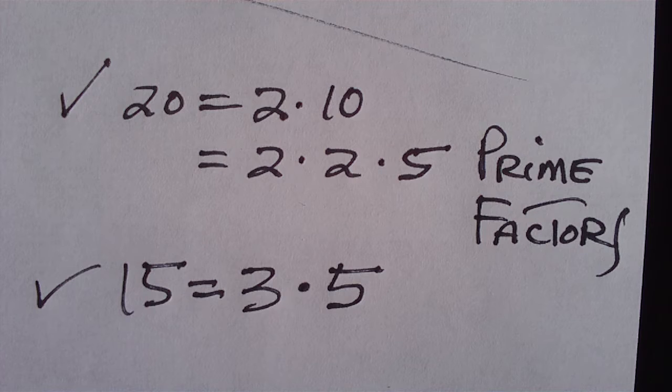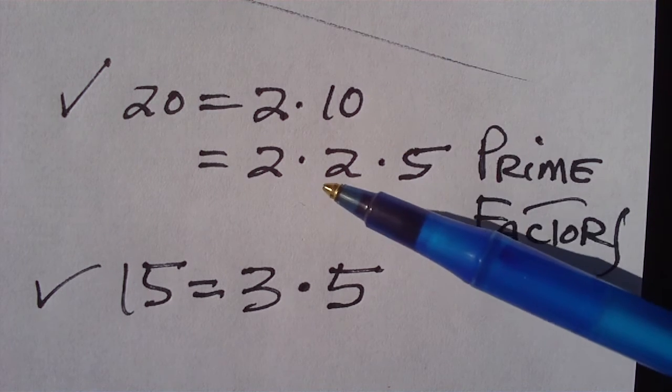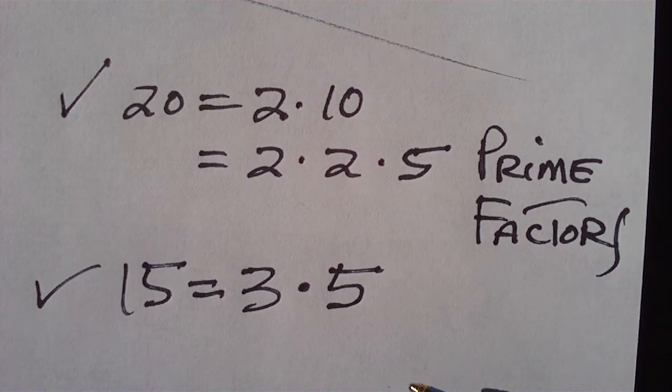The fifteen, we try to divide it by two, it won't go. We divide it by three and we get three times five. Now, we take these prime factors and use each one the greatest number of times it appears in any one of these prime factorizations. This is a prime factorization. This is a prime factorization.